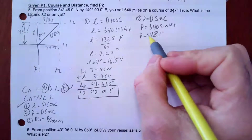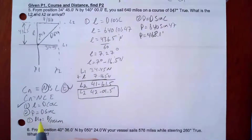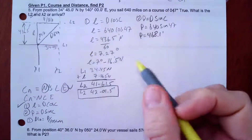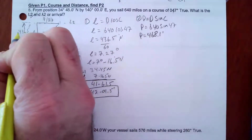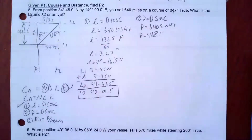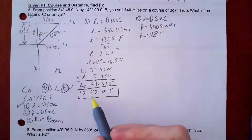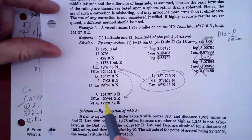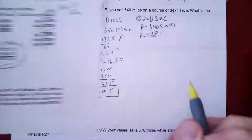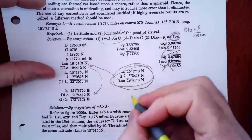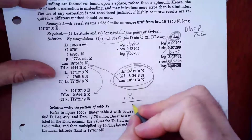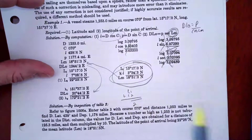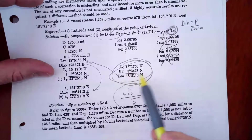That formula is done. I needed P so I can enter it into formula three. Now I need P and cosine LM. Do I have LM? No, I have to calculate LM. I know L2 and L1, so if I just add those two and divide by two I'll get LM. Let's see what Bowditch does — Bowditch took L1 and half of little l. The easiest thing is to go L1 plus L2, divide by two, and that's your LM.